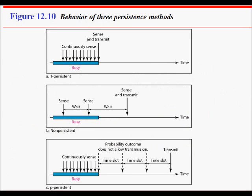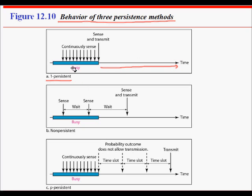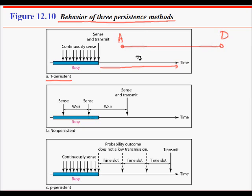There are three different mechanisms for how to sense the channel. The first is one-persistent: you continuously keep sensing the channel, and when you find it is idle you immediately start transmitting. This is the simplest approach, but it has the highest probability of collision. For example, if node A and node D both sense the channel and both find it idle at the same time, both will send and there will be a collision.